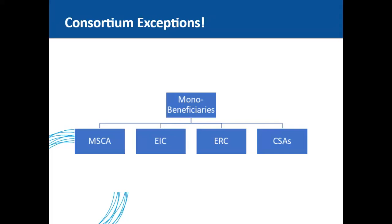The EIC — the European Innovation Council pilot — aims to support top-class innovators, startups, small companies, and researchers with radically different ideas that are highly risky and have the potential to scale up internationally. ERC grants are awarded in open competition to projects headed by starting and established researchers working in or moving to Europe. CSAs — coordination and support actions — offer a 100% funding rate and allow mono-beneficiary participation.